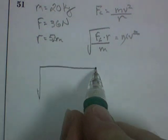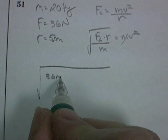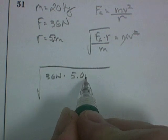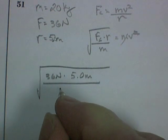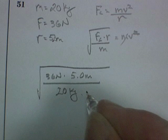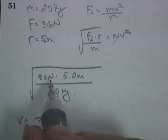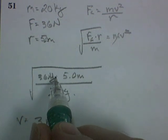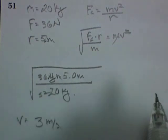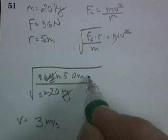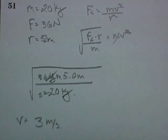So our answer should be the square root of 36 newtons times 5.0 meters divided by 20 kilograms. Got everything with units. Let's just get the calculator out and see what the answer is. And I've got the square root of 9, which would be 3. And I'm looking for velocity. So that's got to be meters per second. And we can check. This would be a newton. Is it kilogram meter per second squared? So kilograms would cancel. It would be meters squared per second squared. Take the square root of it. It would be meters per second. That works.